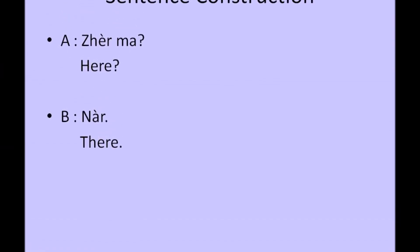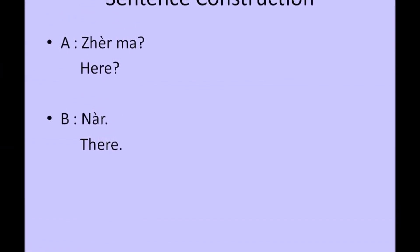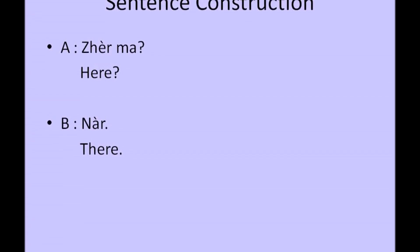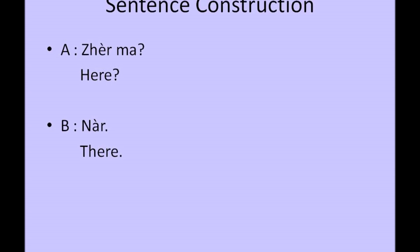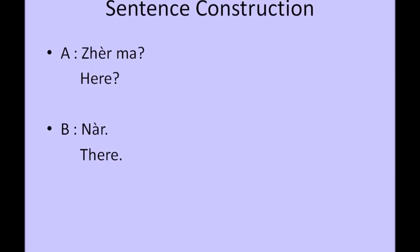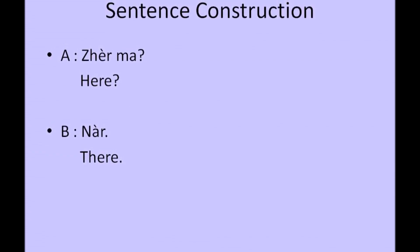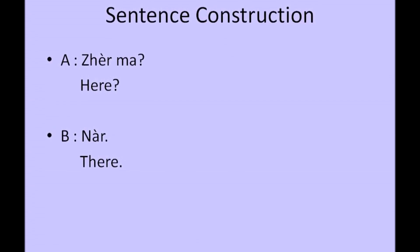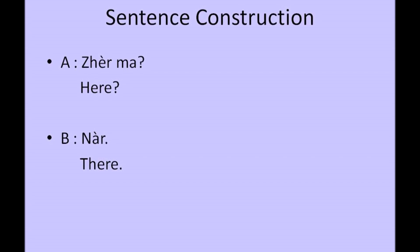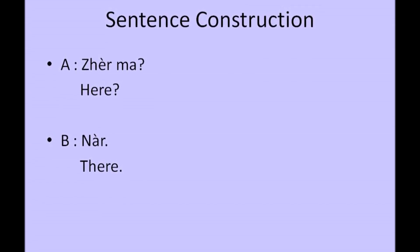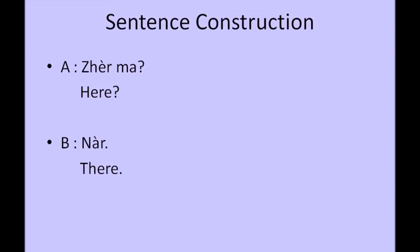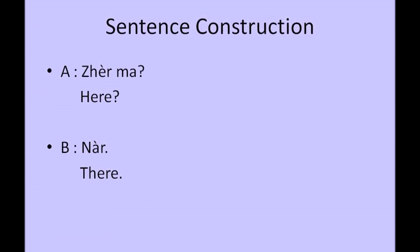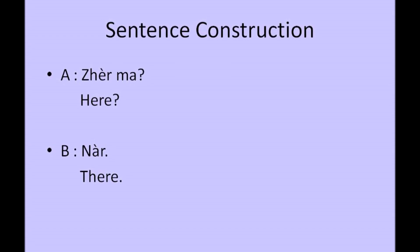In order to explain this specific sentence construction, we use a conversation. 这儿吗? which means here, in the context of asking the position or location. 小姐, 这儿吗? The reply will be 那儿, which means there. This reply can be used only when the position is established.